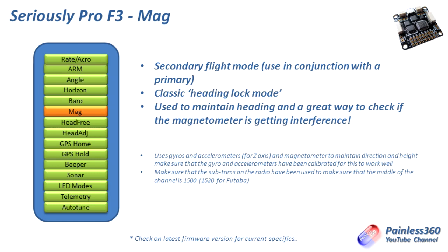Magnetometer is similar to barometer — it augments one of the basic modes and gives you headlock. Rather than just relying on accelerometers and gyroscopes to sense unwanted rotation, it also uses the compass to maintain heading. Whatever heading the craft is at when the rudder is in the middle position, even if wind tries to rotate the model, it will always pull back to that same heading. The magnetometer can get interference from power lines, so if the board is too close to the PCB power distribution or the wires carrying current to the ESCs you'll see the magnetometer deflect. In those cases you need to physically separate the board from the power system or use mu-metal between the board and the power system to reduce interference.